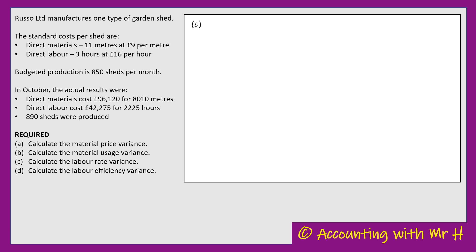On to part C: calculate the labour rate variance. The good news is it's the same formula as the material price variance — you can pair them up when learning. Material price is about how much we're paying for materials; labour rate is about how much we're paying the workers. The labour rate variance equals AQ × (SP − AP). Remember, we're talking about labour now, so all figures — AQ, SP, and AP — need to be about labour.